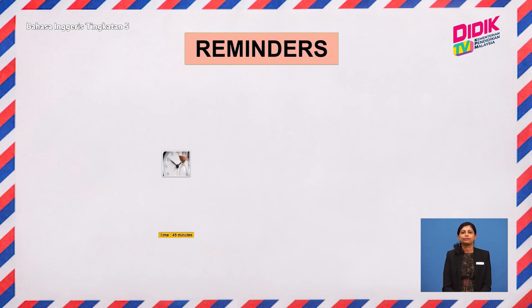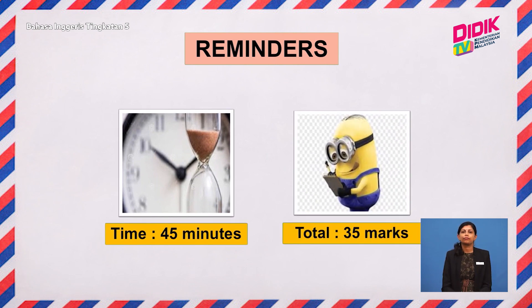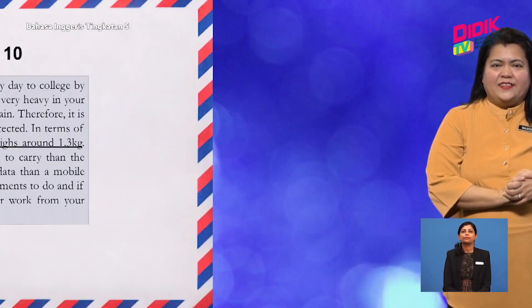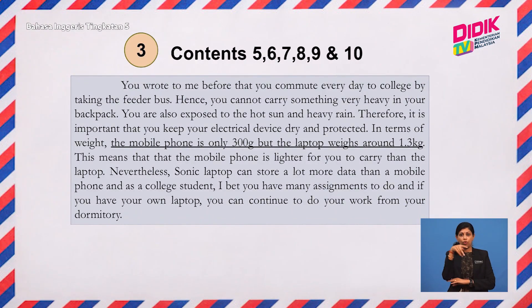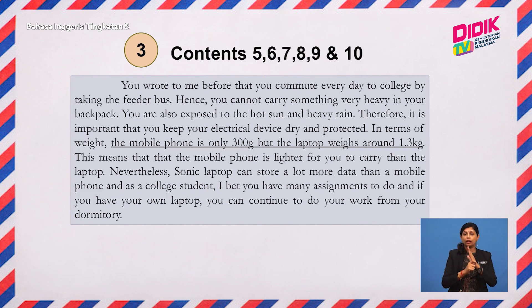Read the information closely — these are your content points. You have information on the mobile phone, the laptop, and another section at the bottom stating you have to add two advantages of your own. During the exam, you can underline and write C1 to C12 on top of the content points in the question paper so that you do not miss them.